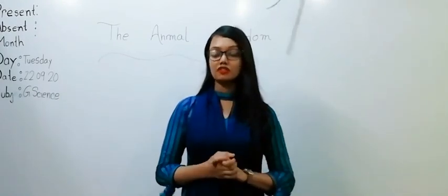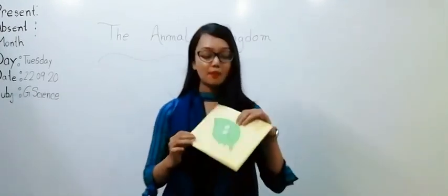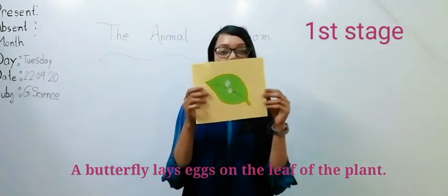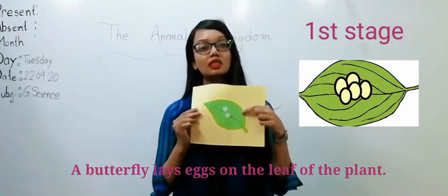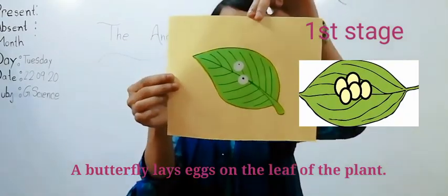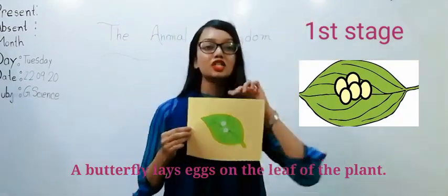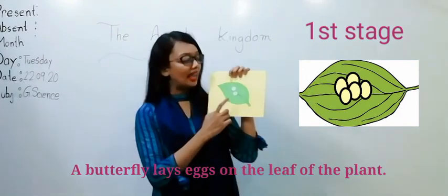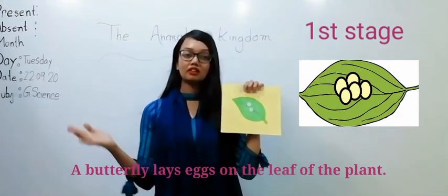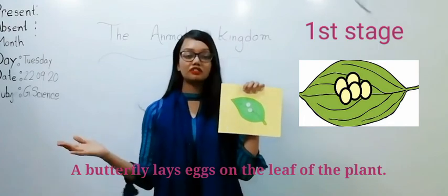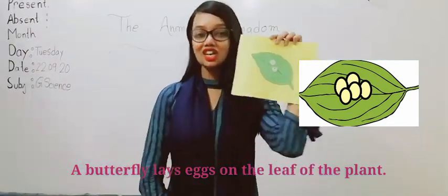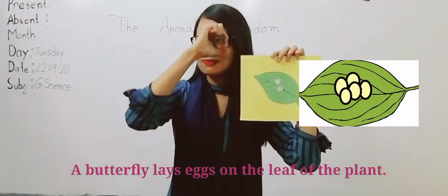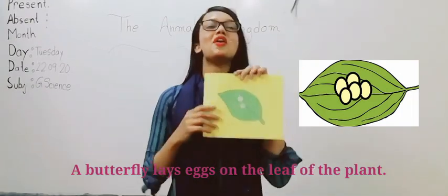First stage - a butterfly lays eggs on the leaf of the plant. So the first stage is eggs. A mother butterfly lays eggs on the leaf of the plant, and the picture of eggs is this.